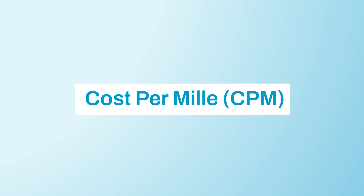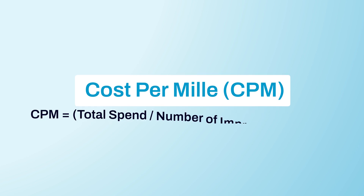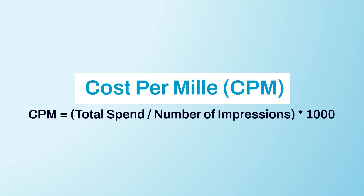CPM stands for Cost Per Mil. Mil is Latin for 1000, and this metric shows the average cost per 1000 impressions of your ads. It's valuable when comparing different campaigns, testing different targeting options, and planning a budget for your future campaigns.